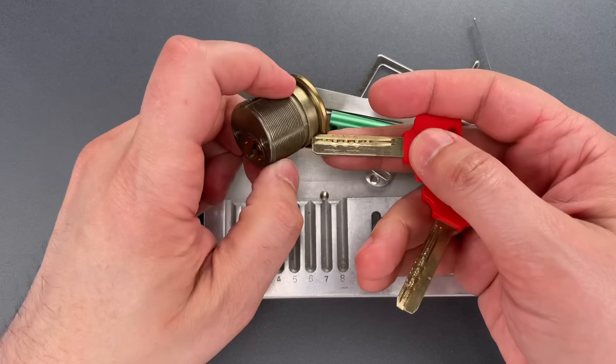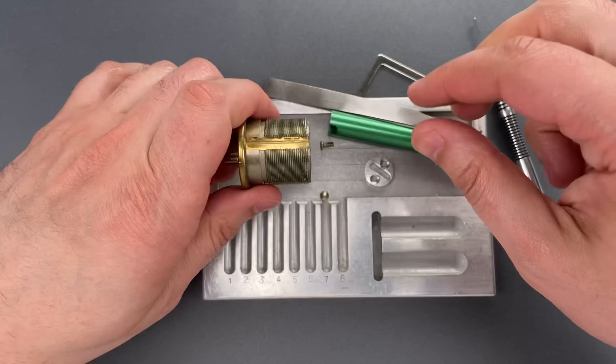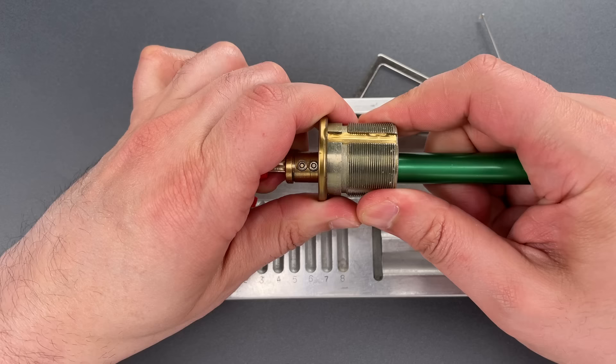Now I need a key and the follower. And I should be able to slide the core out. Okay, let's start by removing the key pins.